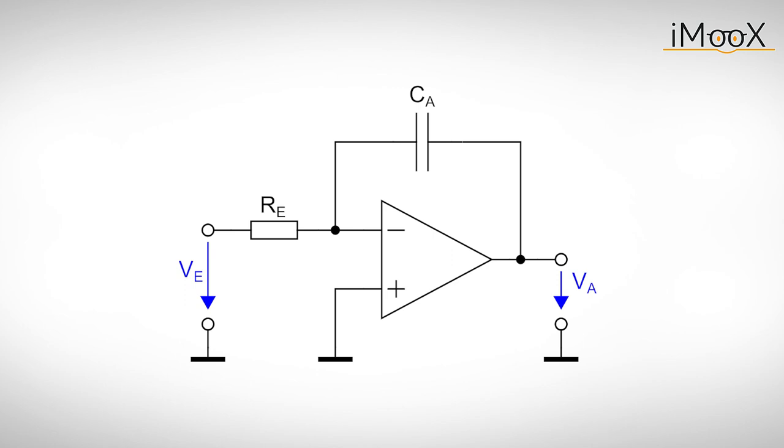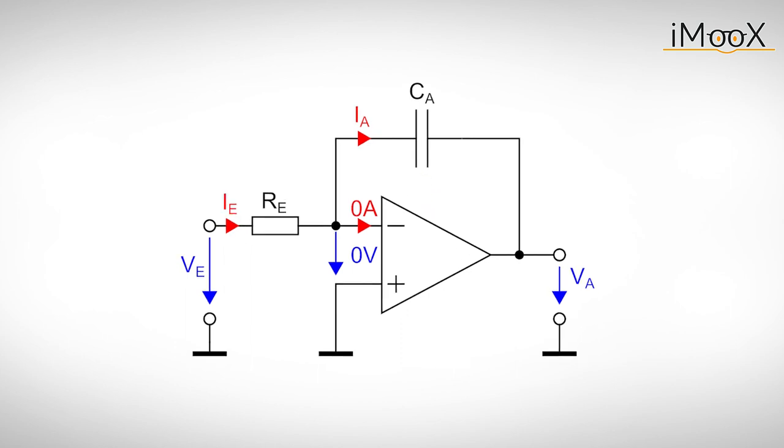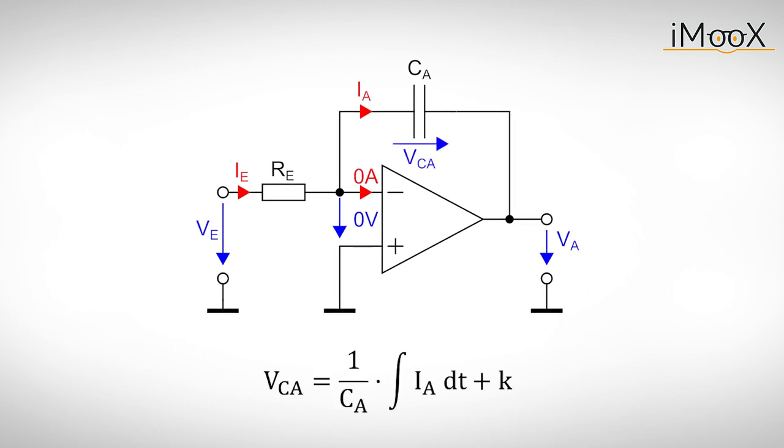But we can also realize an integral with operational amplifiers very easily. This time the capacitor CA is placed between the output and inverting input. The current IE coming from the input resistor RE charges the capacitor. We use the current voltage relation of the capacitor CA and solve for the voltage VCA. The integration constant K holds the voltage over the capacitor before we start our experiment.